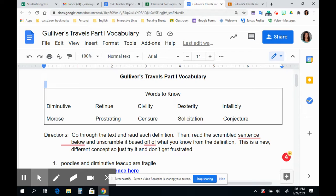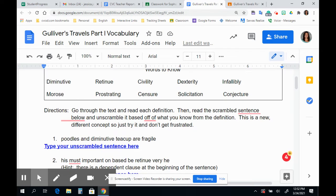So the first thing I'm going to do is I'm going to go through and I'm going to look at all of the words that are from part one. So we have diminutive, retinue, civility, dexterity, infallibly, morose, prostrating, censure, solicitation, and conjecture. So to be able to even create these sentences, first off, I have to know what the words mean.